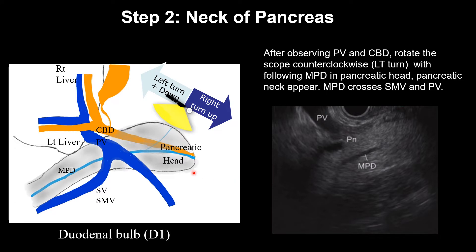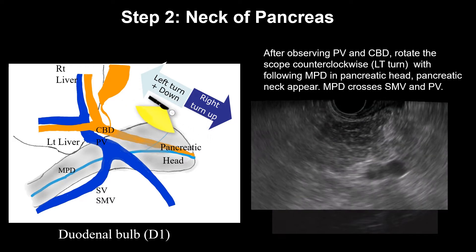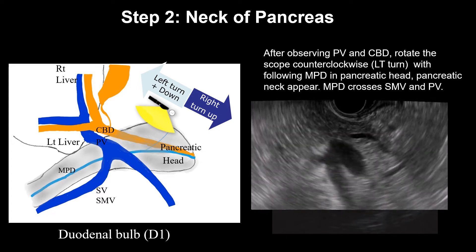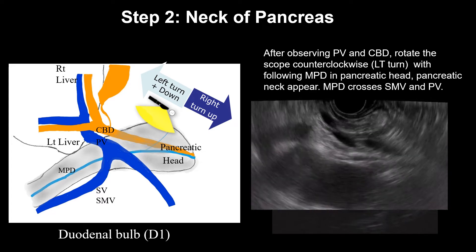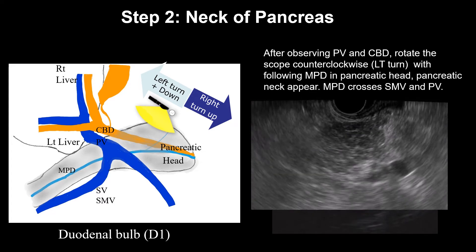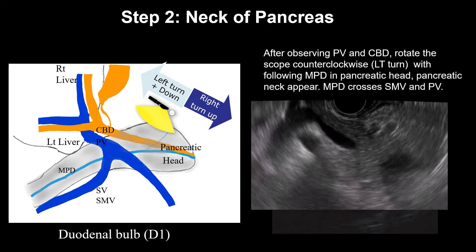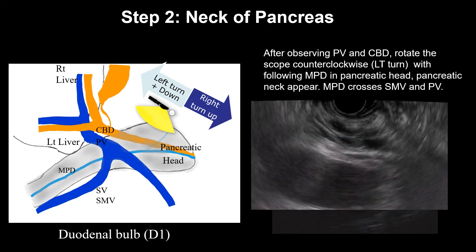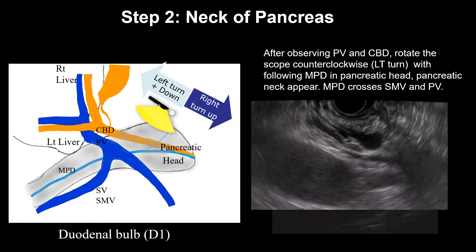After observing the portal vein and CBD, rotate the scope to the left. Following the main pancreatic duct, we can see the pancreatic neck area, MPD, portal confluence, SMV, and portal vein.